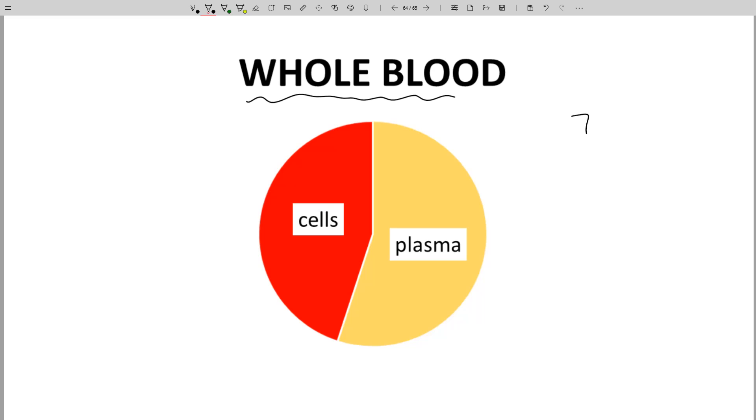A 70 kg patient has 5 liters of blood and about 2.7 liters of plasma.